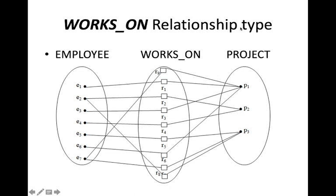Another example is the 'works on' relationship type — an employee works on a particular project. Employee E2 is working on two different projects, P2 and P3, which is why two lines are shown. E7 is also working on two different projects. All other employees work on only a single project. As per the data requirements, an employee can work on several projects. So R1 through R9 are all individual relationships, together forming the relationship set, and 'works on' is the relationship type.